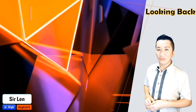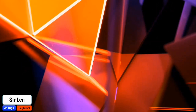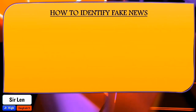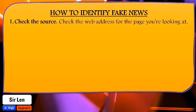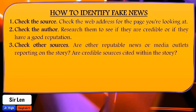Fake news refers to false or misleading information which masquerades as legitimate news. How to identify fake news: Number 1, check the source — check the web address for the page you're looking at. Number 2, check the author — research them to see if they are credible or if they have a good reputation. Number 3, check other sources — are other reputable news or media outlets reporting on the story? Are credible sources cited within the story?